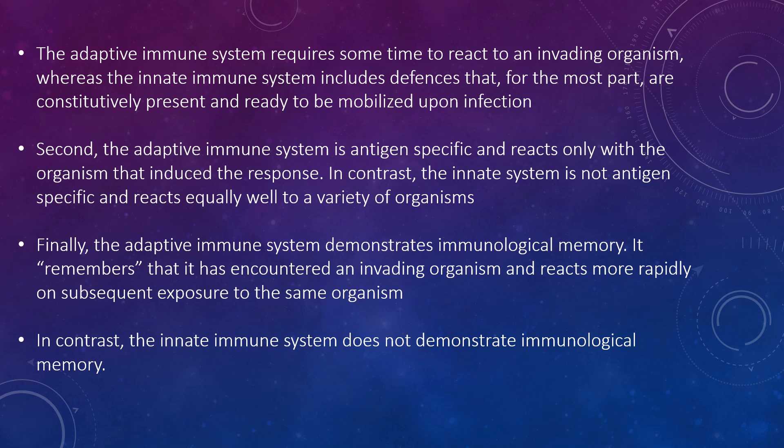The adaptive immune system is antigen specific and reacts only with the organism that induced the response. In contrast, the innate system is not antigen specific and reacts equally well to a variety of organisms. Finally, the adaptive immune system demonstrates immunological memory — it remembers encountering an invading organism and reacts more rapidly on subsequent exposure. In contrast, the innate immune system does not demonstrate immunological memory.